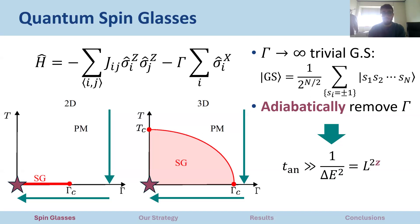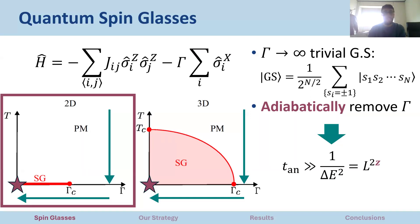Adiabatic here refers to the fact that the time needed to remove the external field must be much larger than the inverse of the energy gap between the ground state and the first excited state. As we can see in both diagrams, we have to cross the critical point to enter the spin glass phase. From theory it can be shown that this energy gap scales with system size as a power law, and the exponent zeta is the critical dynamical exponent of the transition, making it very interesting to study. We focus on the two-dimensional model.